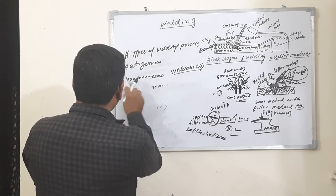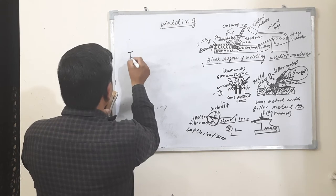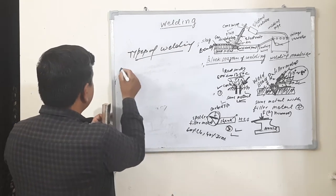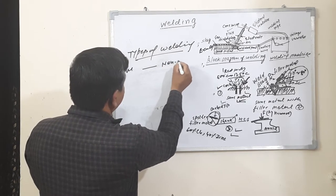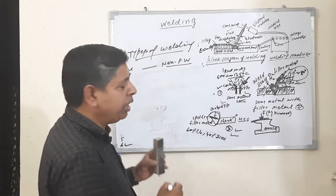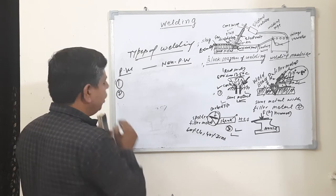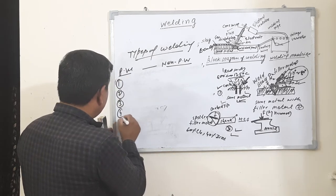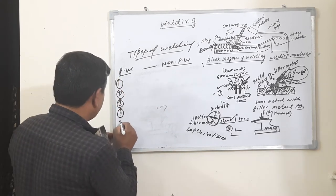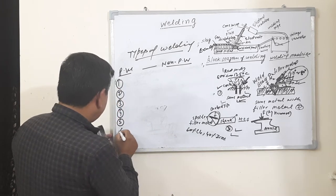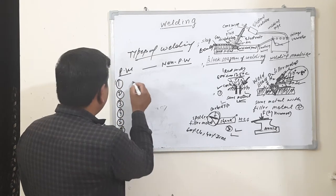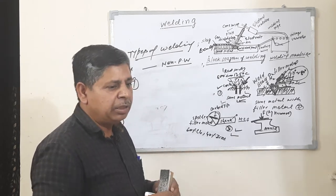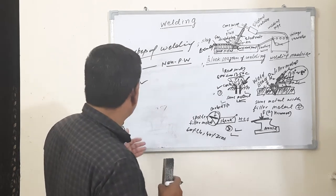There are different types of welding. Welding is generally of two types: pressure welding and non-pressure welding. Pressure welding includes: number one, blacksmithy; number two, spot welding; number three, seam welding; number four, projection welding; number five, butt welding; number six, friction stir welding; number seven, friction welding.